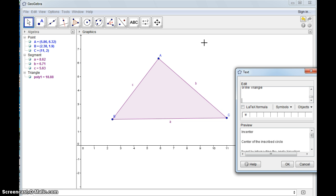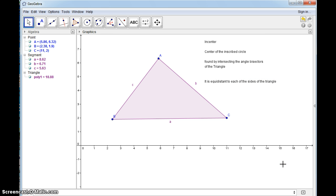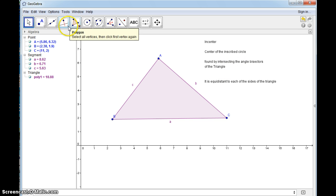It's equidistant to each of the sides of the triangle. So let's find the incenter. The incenter is found by intersecting the angle bisectors of the triangle. So let me show you how to do that.